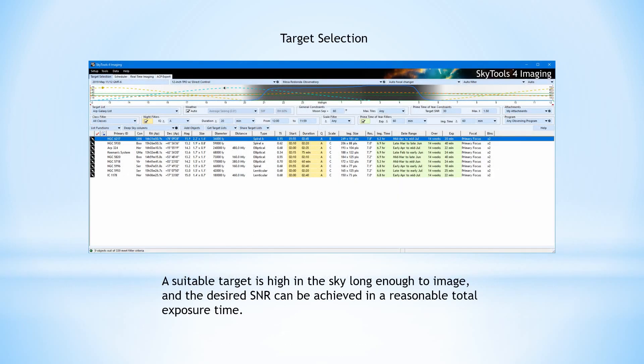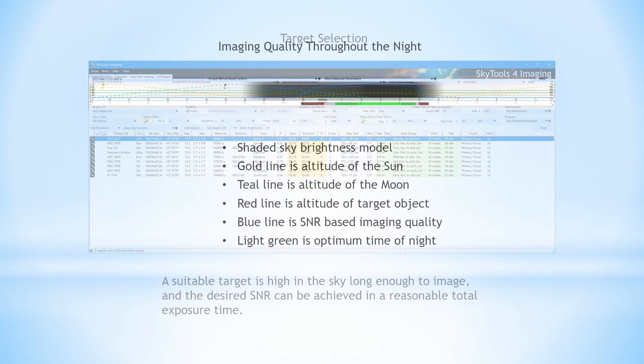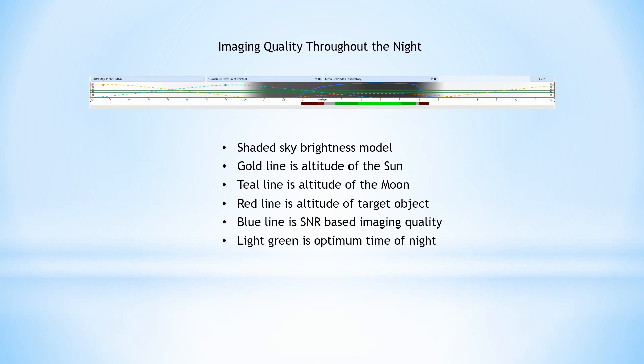The first step in taking a great image is finding a target that is suitable for your imaging system. It should be high in the sky, have a good image scale, and the desired SNR must be reachable in a reasonable amount of time. What if we calculate the SNR of a single image every five minutes throughout the night, and then compare the SNR to the best SNR that we can get?